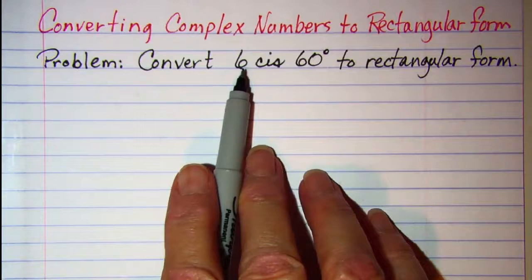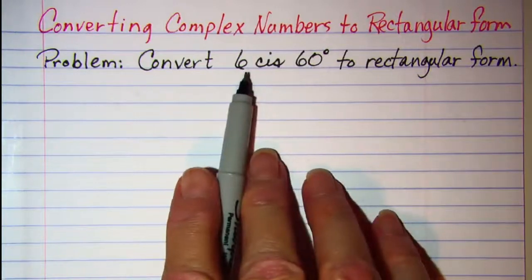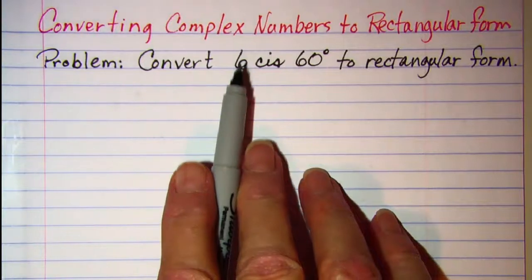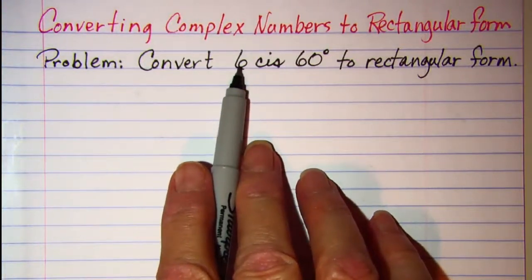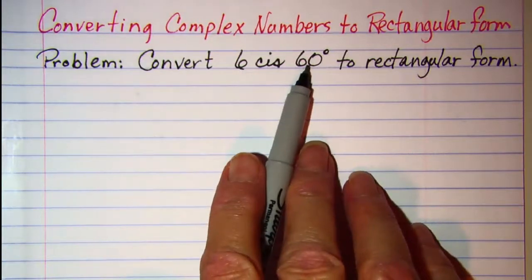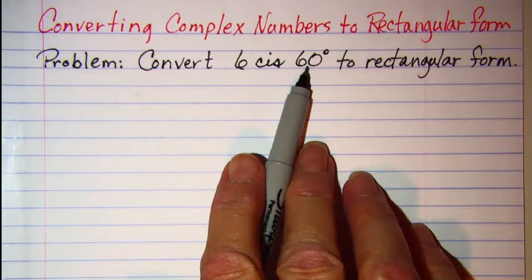Now we know whenever we are given a complex number in polar form, this number out in front is the r value and this number in the back is theta.